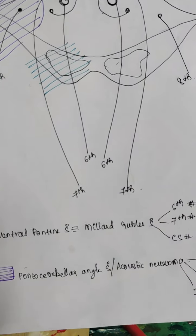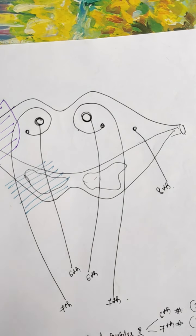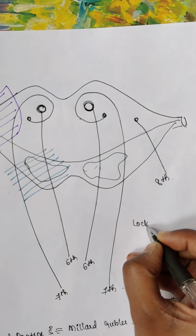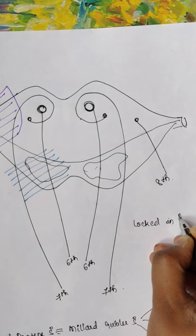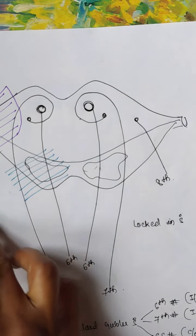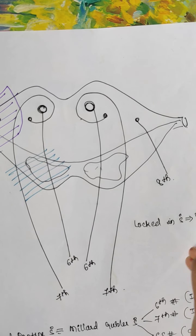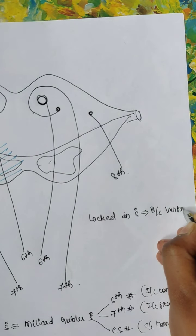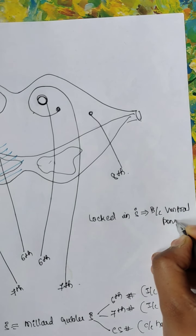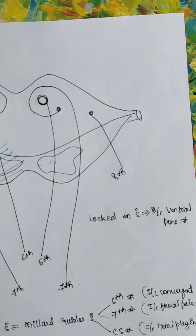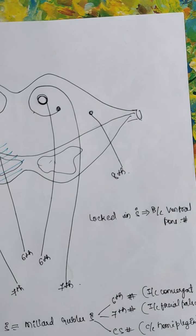One more term is Locked-in syndrome. This occurs when there is a bilateral ventral pons lesion. The patient cannot move any part of their body. The only things they can do are blink and move their eyes up and down. The patient is aware and awake but is not able to do anything else.